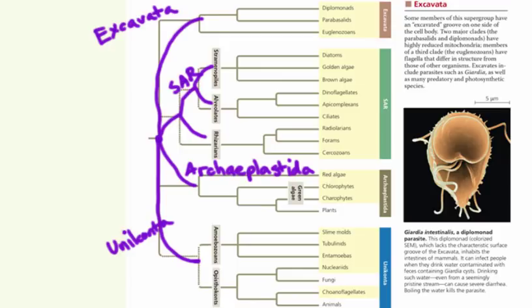Think of these as the four major limbs of the eukarya part of the tree of life. Remember that these groupings are strongly supported by molecular sequence homology. In my experience, Campbell's Biology does a really outstanding job of staying on top of the continual flow of new taxonomic information.